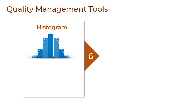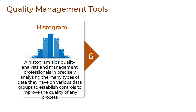Then, histogram. A histogram aids quality analysts and management professionals in precisely analyzing the many types of data they have on various data groups to establish controls to improve the quality of any process. The frequency of the data is estimated when a sample is taken and divided into different groups. This aids in the discovery of process improvement opportunities. The low-performing areas appear on the histogram with less frequency, allowing quality management professionals to identify and solve the problem's root cause.